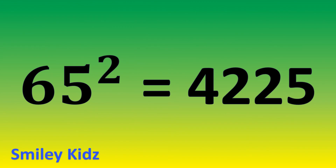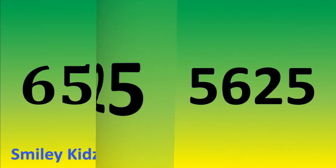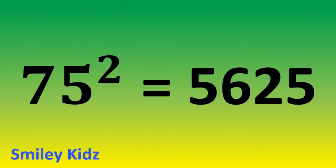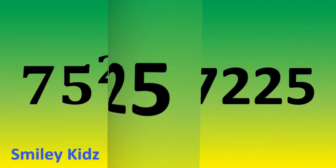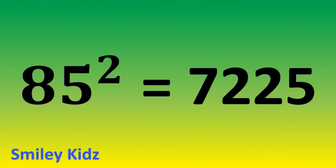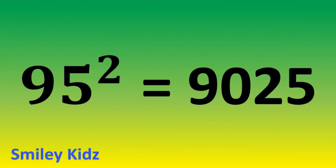65 square is 4225. 75 square is 5625. 85 square is 7225. 95 square is 9025.